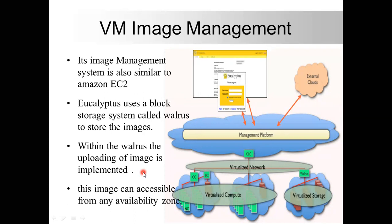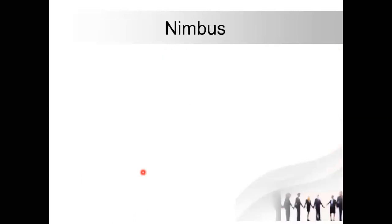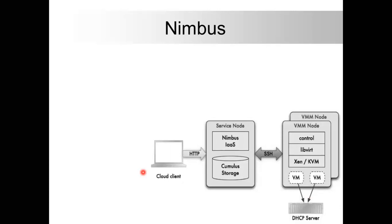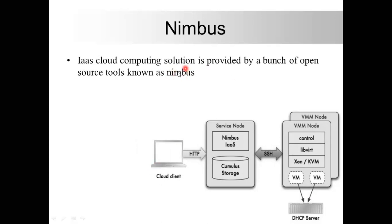Next we'll see the emerging cloud software environment — Nimbus. Nimbus is a bunch of open source tools that provides an Infrastructure as a Service (IaaS) cloud computing solution. The architecture diagram shown here illustrates how Nimbus works.